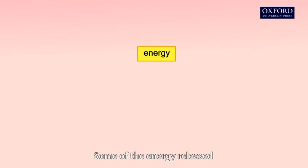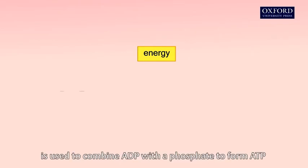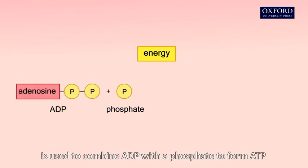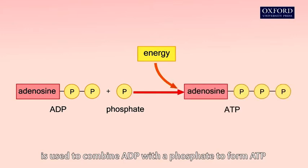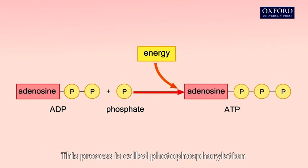Some of the energy released is used to combine ADP with a phosphate to form ATP. This process is called photophosphorylation.